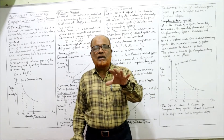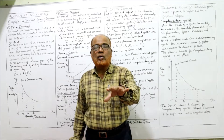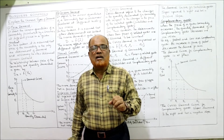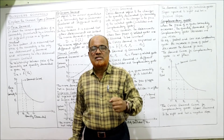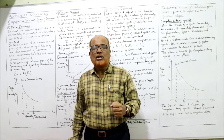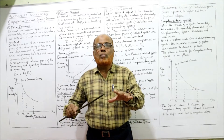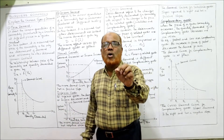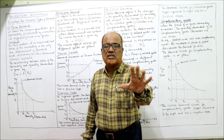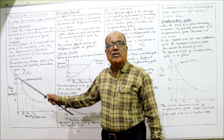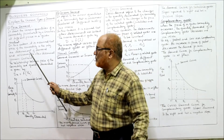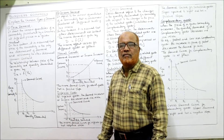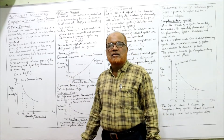As explained in the previous video, demand depends not only on price but also on income, preferences, tastes, habits, prices of substitutes, and advertisement. However, in price demand, we assume all other factors remain constant and demand depends only on price.